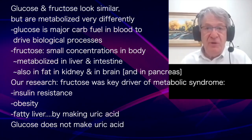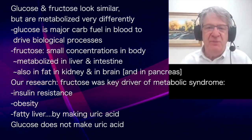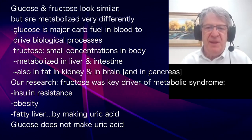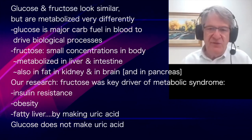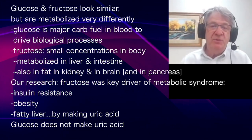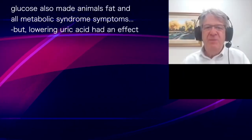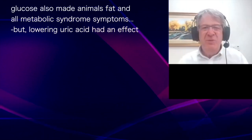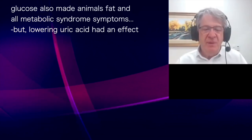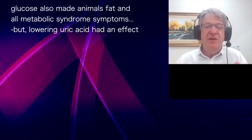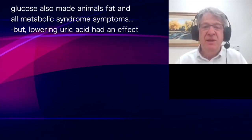Initially in our research, we found that fructose was really the key sugar driving obesity and metabolic syndrome. If we fed animals fructose, they became very fat, insulin resistant, developed fatty liver and high blood pressure. Fructose was what was generating the uric acid — glucose doesn't make uric acid. But when we gave glucose to animals, they also became fat. When we lowered uric acid in animals fed sugar, we could have an effect, suggesting something was going on with the glucose as well.